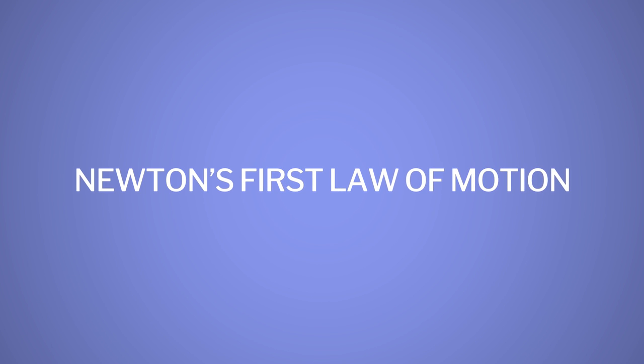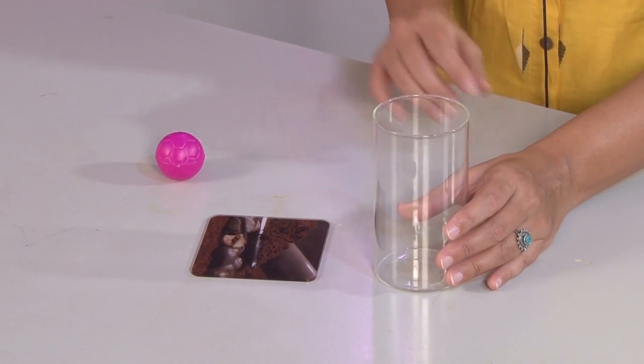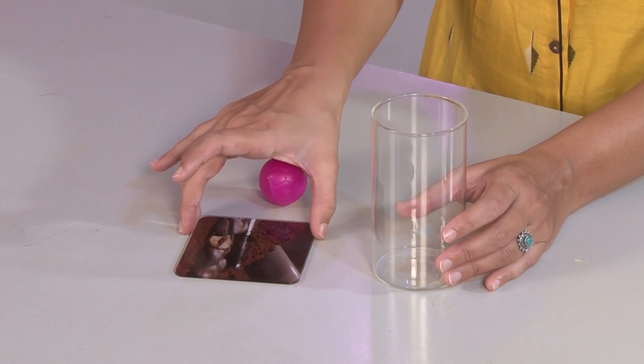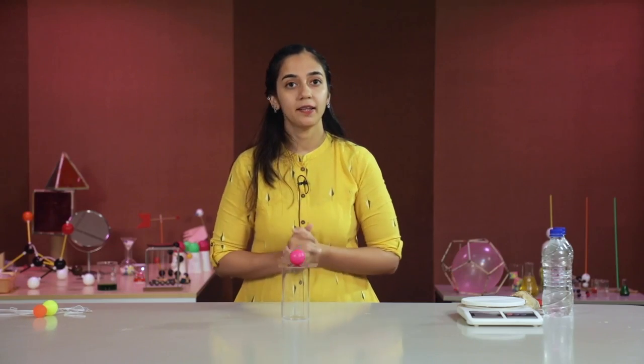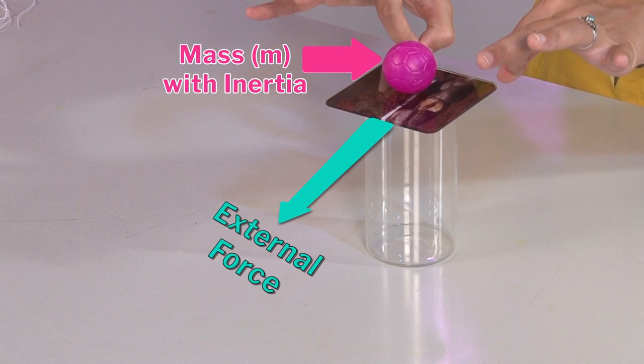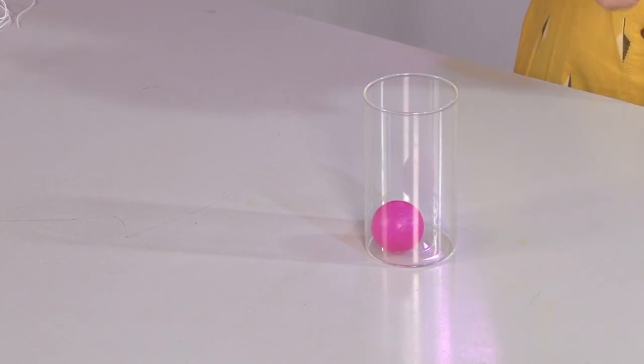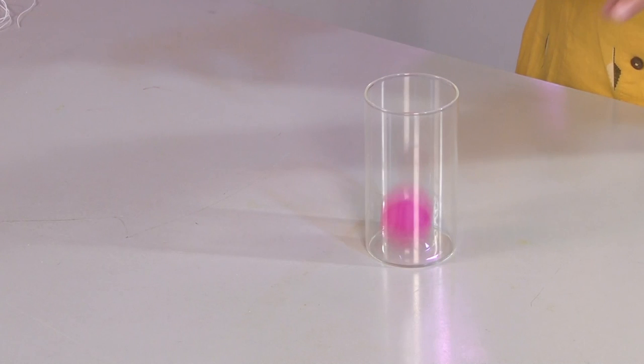Now we will talk about Newton's first law of motion. Mass of an object decides the inertia of an object. But if we apply force on that object, its state changes from rest to motion or motion to rest. Here we have a glass, a plain plastic plate, and a plastic ball. I will place this plate on top of the glass and balance this ball in the center of the plate. Now I will flip the plate with my finger with one clean motion. The ball doesn't move with the plate — it falls straight into the glass because of gravity. We observed that an external force on the plate threw it off the glass but the ball stayed at rest.